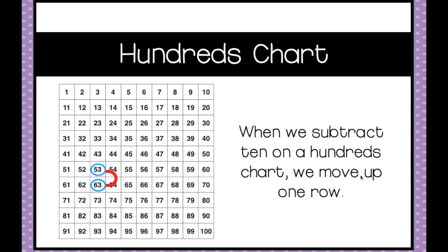When we subtract 10 on a hundreds chart, we move up one row. So here we are at 63, we subtract 10 by moving up one row. And as you can see again, the numbers are getting smaller. So that lets us know that we are subtracting.